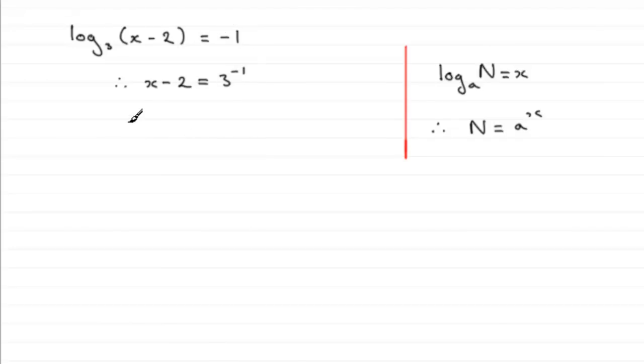3 to the minus 1, from basic indices, is the same as 1 over 3 to the power 1, or in other words just simply a third. So to get x we just need to add 2 to both sides.